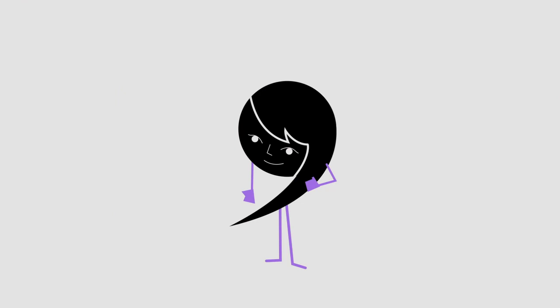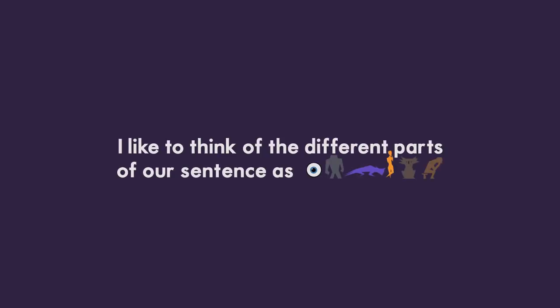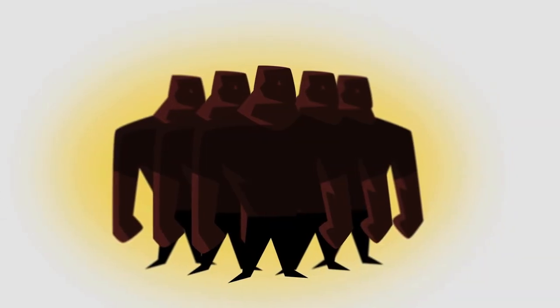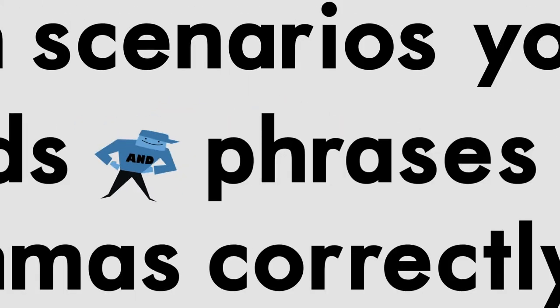Commas are tricky things, especially when subordinates and conjunctions are involved. If you can remember a few basic rules, a simple law of physics, and some common scenarios, you will be able to use commas correctly. Let's meet a few characters: the tiny conjunctions, the mighty subordinates, and the clever comma. Conjunctions are small and nimble — they are words that connect clauses, words, and phrases.